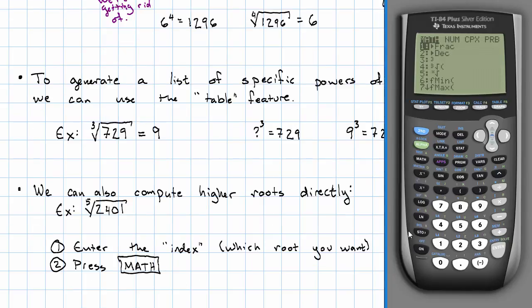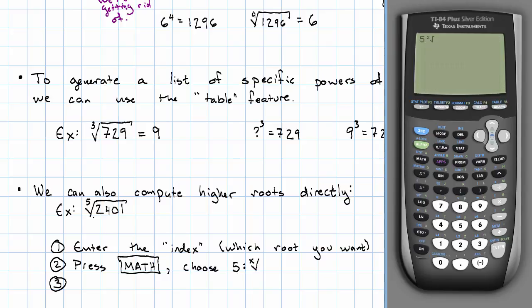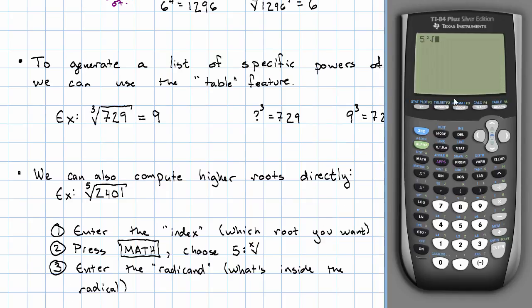We'll press the math key. And you see the little radical with an x outside it? It's option 5.